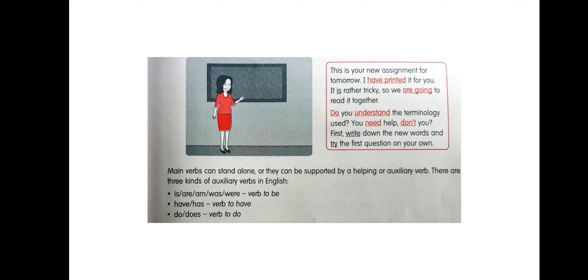Main verbs can stand alone or they can be supported by a helping or an auxiliary verb. There are three kinds of auxiliary verbs in English. First, is, are, am, was, were — verb to be. Second, have and has — verb to have. Third, do and does — verb to do. In the first kind we have five auxiliary verbs, in the second type two auxiliary verbs, and in the third type two auxiliary verbs.